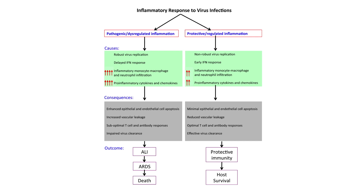How do we get a cytokine storm? Innate immunity — particularly type 1 interferon generation — is very important. In a protective and regulated inflammation, there is a non-robust viral replication due to an early interferon response, resulting in increased pro-inflammatory cytokines, inflammatory macrophage and neutrophil infiltration to remove the virus, minimal epithelial and endothelial apoptosis, reduced vascular leakage, and ultimately host survival. However, in patients with a dysregulated immune response, there is a delayed interferon response and robust viral replication.